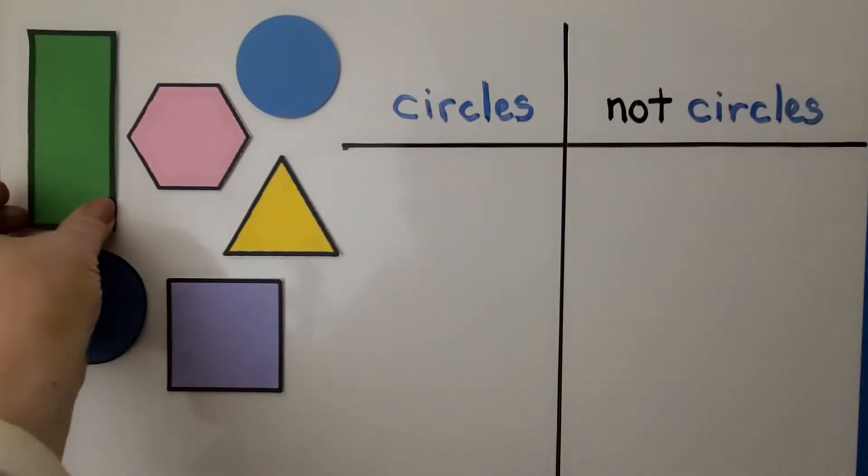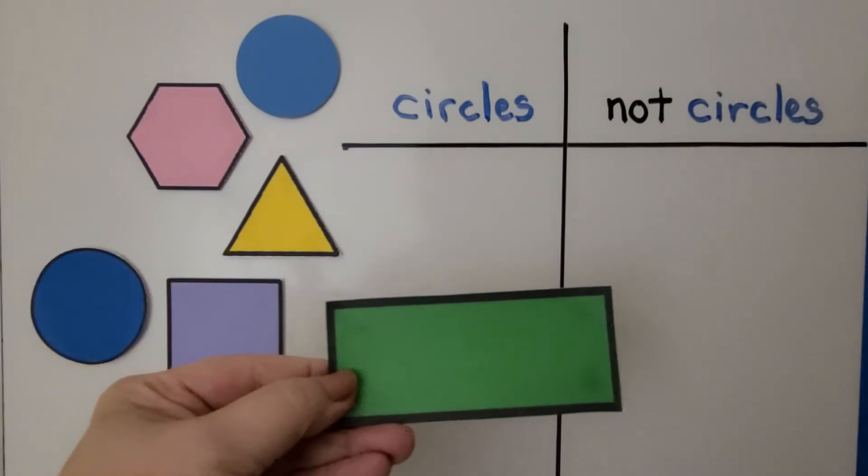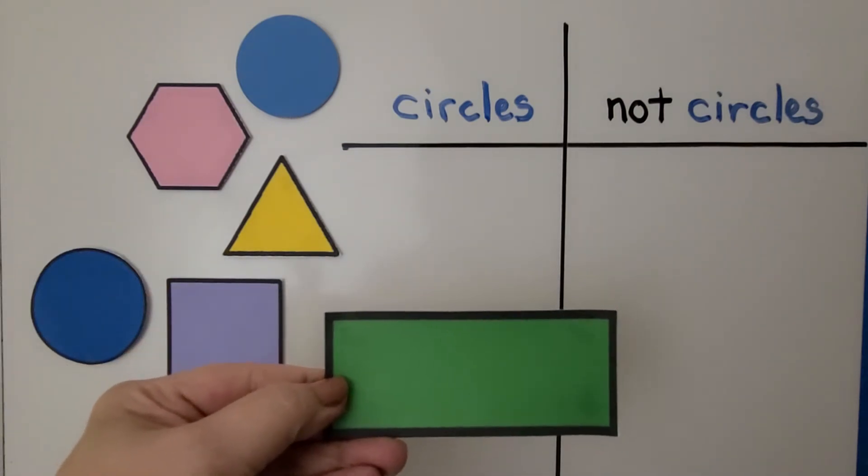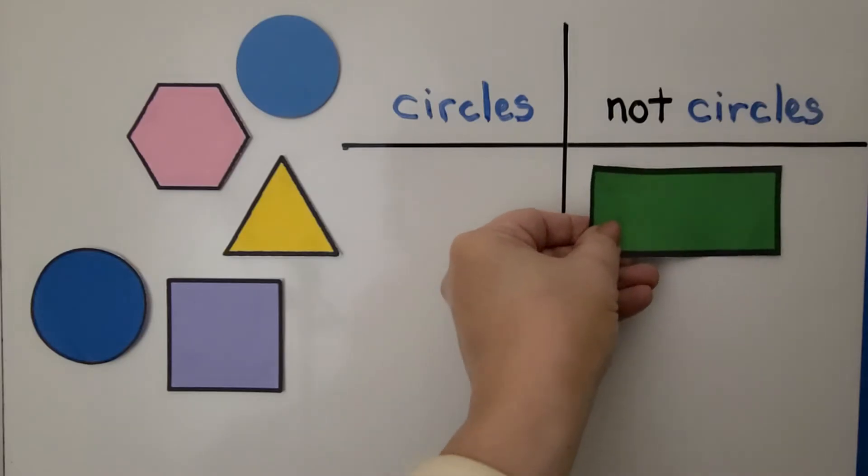Do you think this is a circle or not circle? What do you think? If you said not circle, you're right. That's a rectangle.